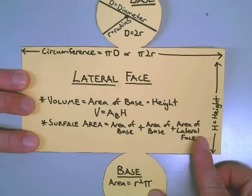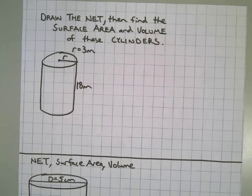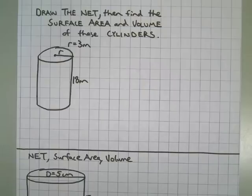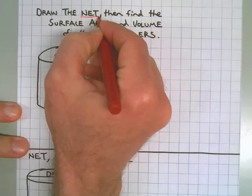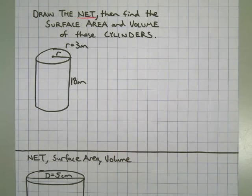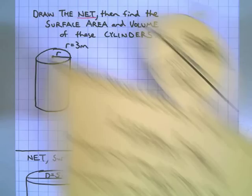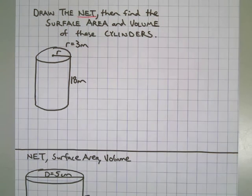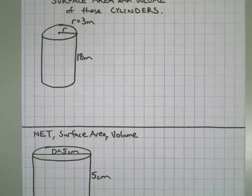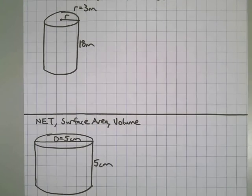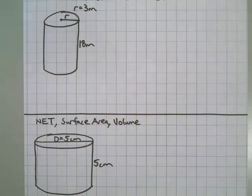Next we're going to do a couple of practice problems. I'm going to ask you to draw the net — the net is a two-dimensional representation of a 3D figure. Then, using the net, find the surface area and volume of both cylinders. If you need to rewind and go back to the Sweet Cylinder Soda to find the information you need, please do so. Copy the problems onto your own paper, pause the video, do your calculations, then resume and I'll work through them step by step.